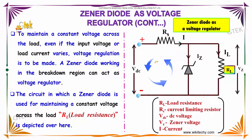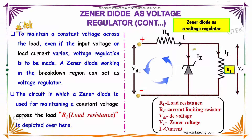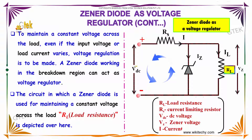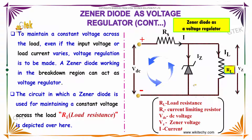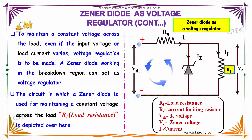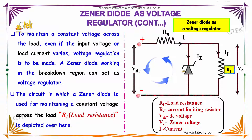To maintain a constant voltage across the load even if the input voltage or load current varies, voltage regulation is needed. A Zener Diode working in the breakdown region can act as a voltage regulator.